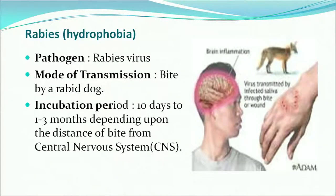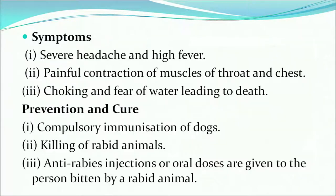Next we discuss rabies, also called hydrophobia. Its pathogen is the rabies virus and it is transmitted by the bite of a rabid dog. Symptoms include severe headache, high fever, painful contraction of muscles of the throat and chest, choking and fear of water, leading to death. Prevention includes compulsory immunization of dogs, killing of rabid animals, and anti-rabies injections given to the patient.